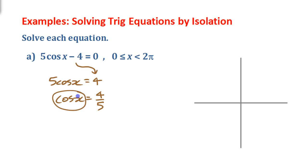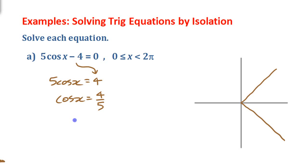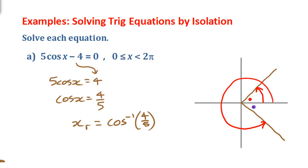Now we've isolated the trig function and we can go about finding those values of x. Cosine is 4 fifths, which means we're going to be looking in quadrant 1 and quadrant 4, because that's where cosine is positive. To find those angles, we first have to find the reference angle using the cosine inverse function of 4 fifths. One of the angles is the reference angle itself, but the other angle is in quadrant 4 — we'll use 2 pi minus that reference angle to find it.